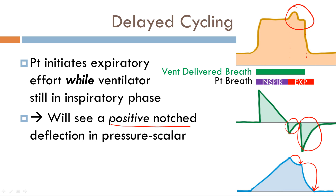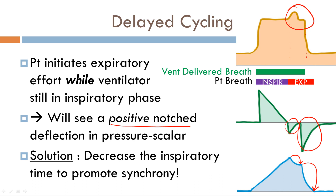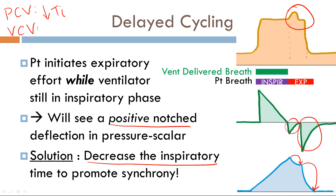To fix delayed cycling, we want to decrease inspiratory time to promote synchrony. Decrease the inspiratory time to match the patient's inspiratory effort so the patient can exhale appropriately. How you decrease inspiratory time depends on the mode of ventilation. In pressure control ventilation, you simply decrease your inspiratory time, as it is the cycle variable. In volume control ventilation, you either decrease the tidal volume or increase the flow rate.